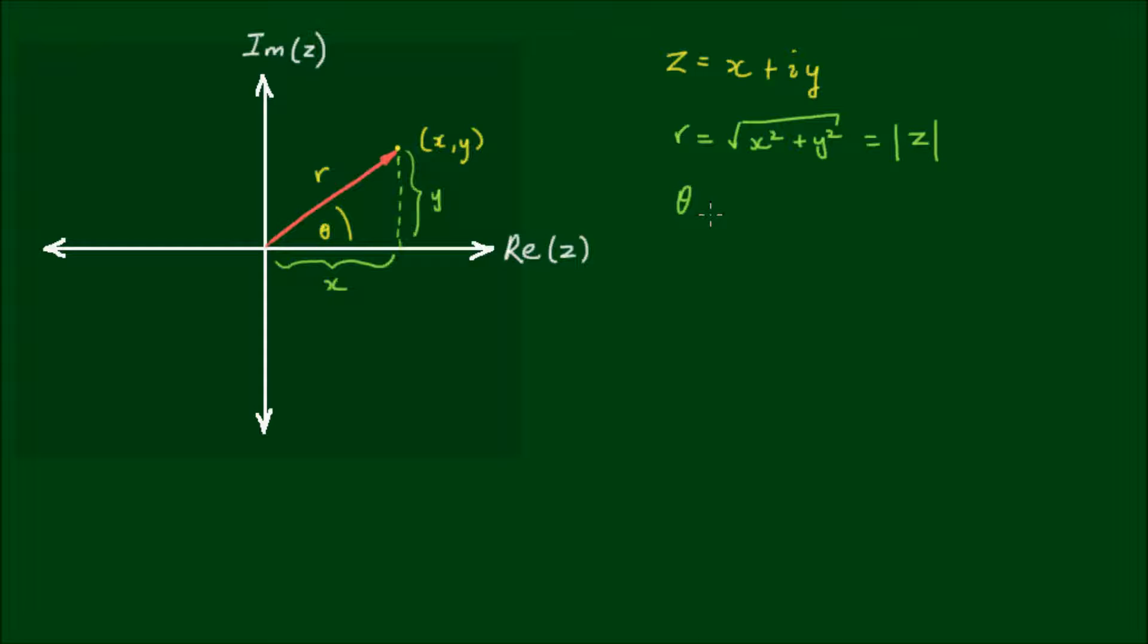And the angle θ by trigonometry is simply the inverse tan of y divided by x. And this we call the argument of z, written as arg z.